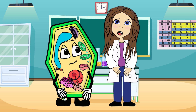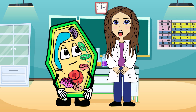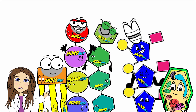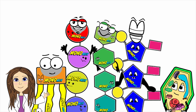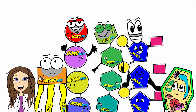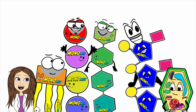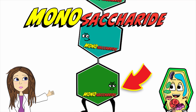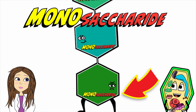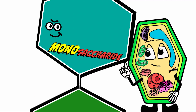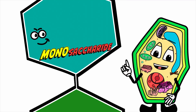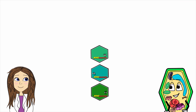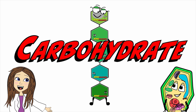Now let's create macromolecules. Before we start, you need to know that the monomers — the puzzle pieces needed to build macromolecules — are named differently in each macromolecule. For example, the first macromolecule we are going to build is a carbohydrate. The monomer in a carbohydrate is called a monosaccharide. So if you combine a bunch of monosaccharides, you create a carbohydrate.